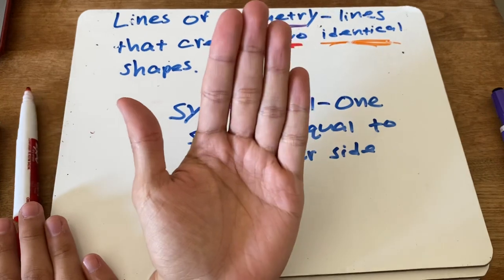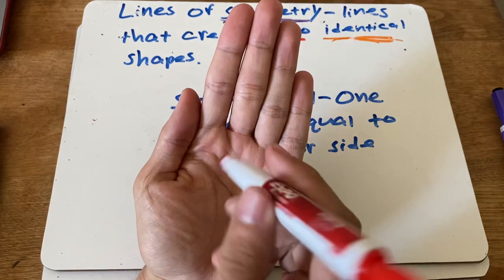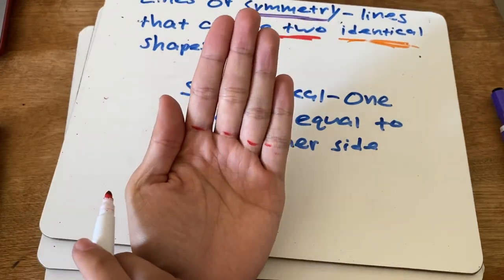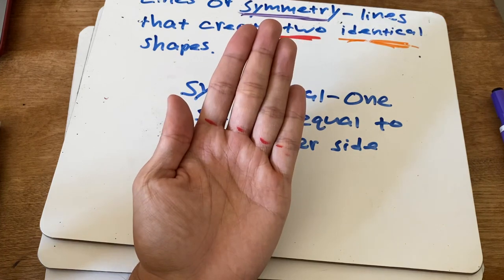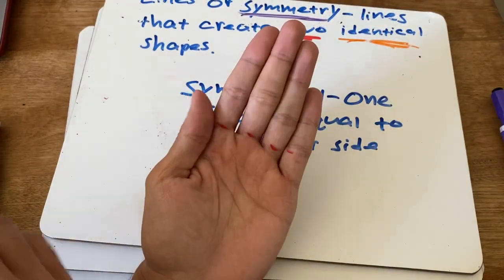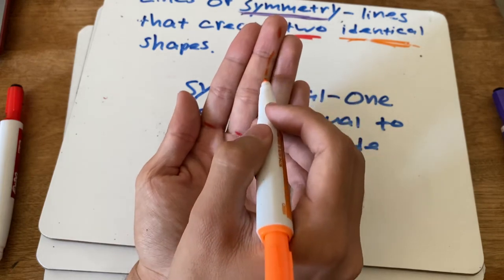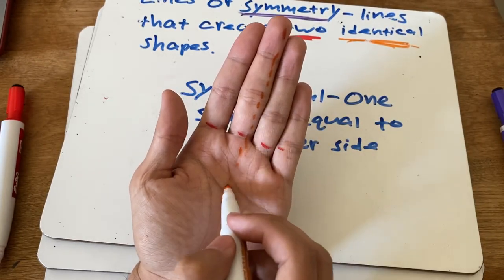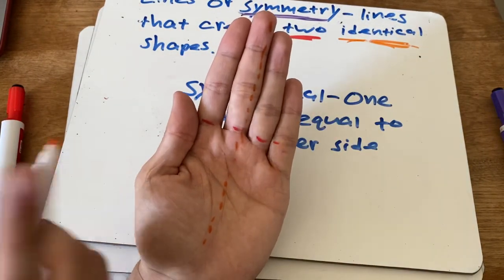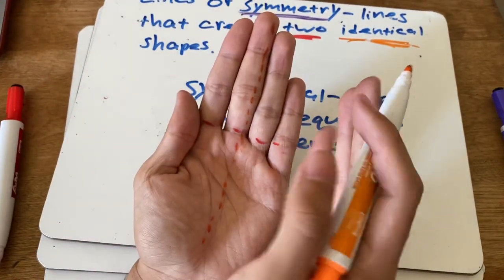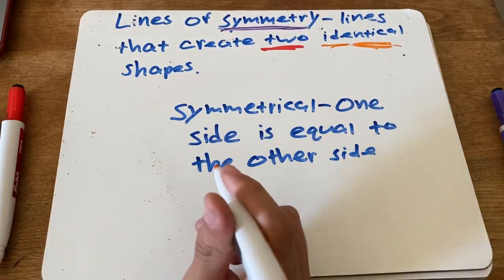Let's look at your hand. Can we find any lines of symmetry? If we draw a line here — is the top half of our hand the same as the bottom half? No, absolutely not — I have fingers on one side and a palm on the other. What if I cut it down the middle — is this side the same as that side? No, because on one side I have a thumb and the other side I have a pinky, so these are not symmetrical.